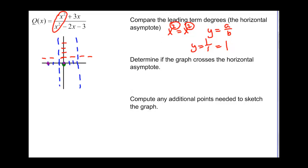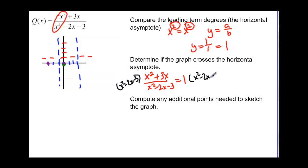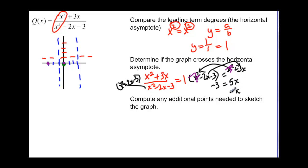Now we need to determine if the graph crosses the horizontal asymptote. We set (x² + 3x) / (x² − 2x − 3) = 1 and multiply both sides by (x² − 2x − 3) to clear the fraction, giving x² + 3x = x² − 2x − 3. The x² terms cancel, and solving gives x = −3/5.